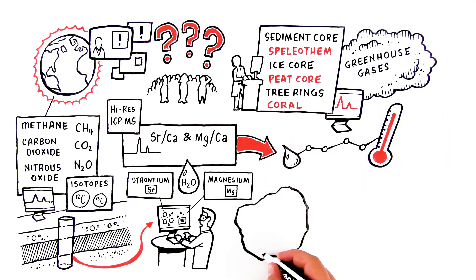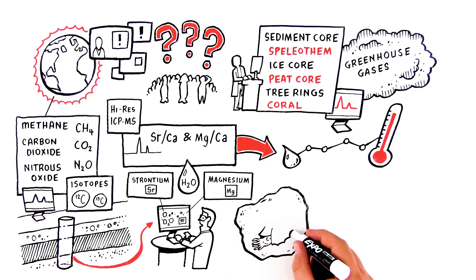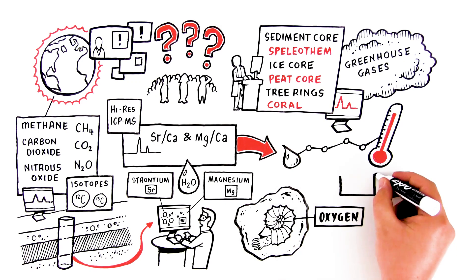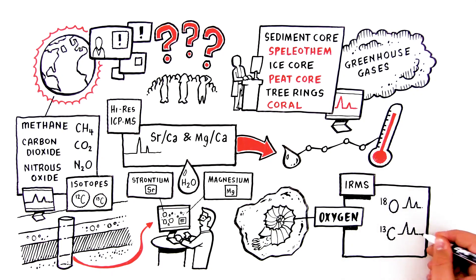Shells from animal and plant fossils also contain oxygen. When ocean waters are cold, the shells generally contain greater proportions of heavier oxygen isotopes. With IRMS, you can analyze the thermodynamic properties of clumped 18O and 13C.